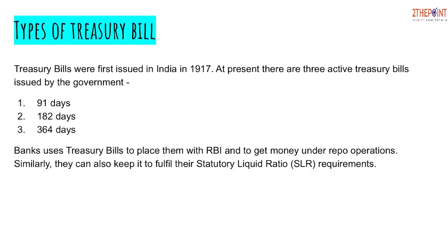Types of Treasury Bills: Treasury Bills were first introduced in 1917, and there are three types based on maturity — 91 days, 182 days, and 364 days. Banks use Treasury Bills to place them with the RBI and to get money under repo operations.